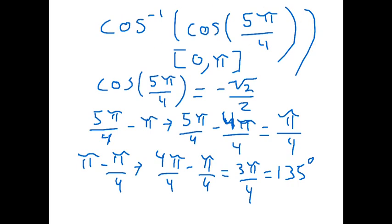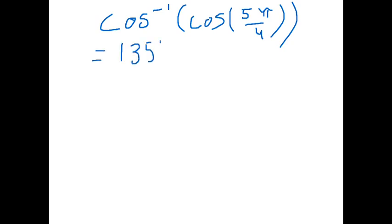But let's do a further and more thorough explanation of why this is. So back to our original problem, which was inverse cosine of cosine of 5π over 4. The answer to this is 135 degrees, which is also equal to 3π over 4 radians. We need to check and see if this actually satisfies the inverse properties.